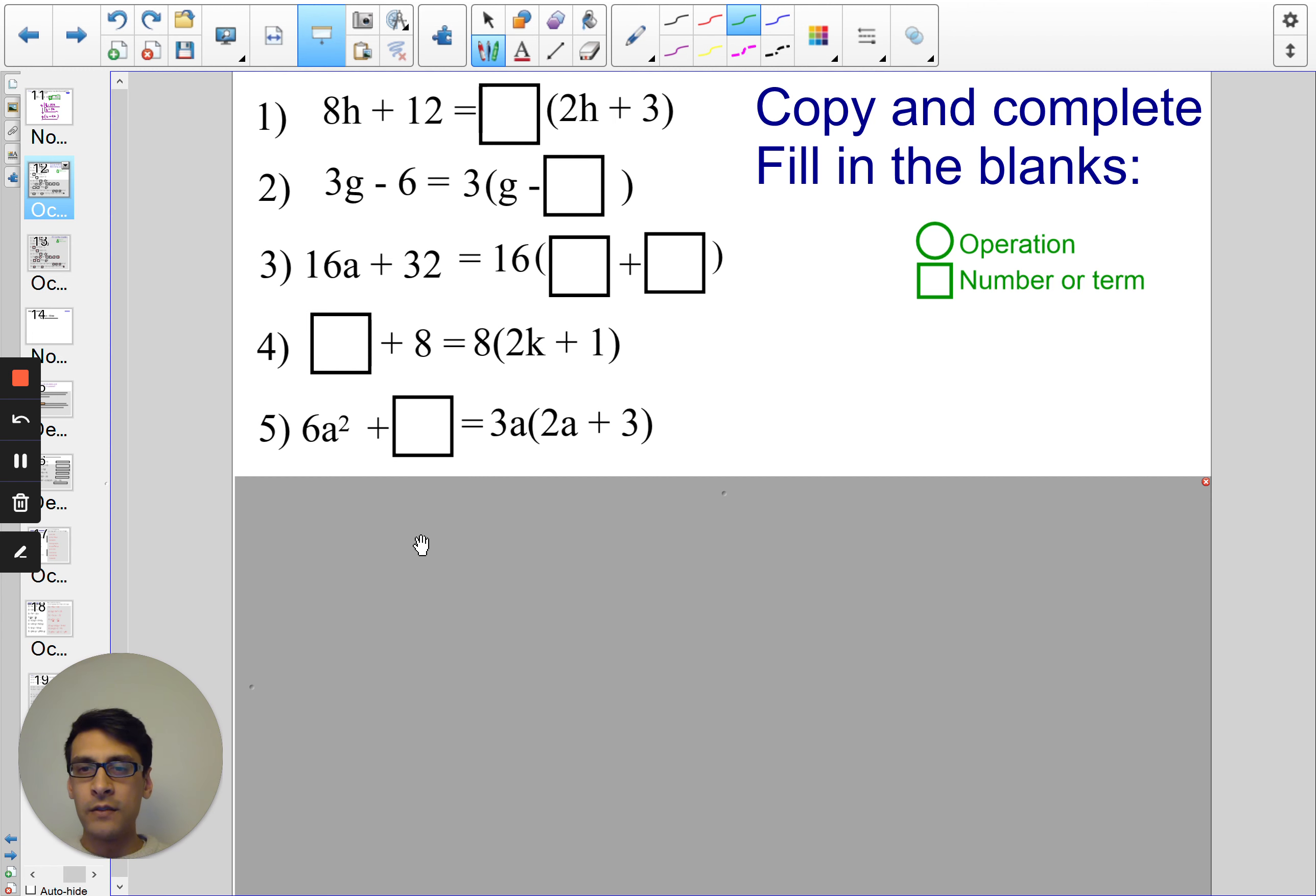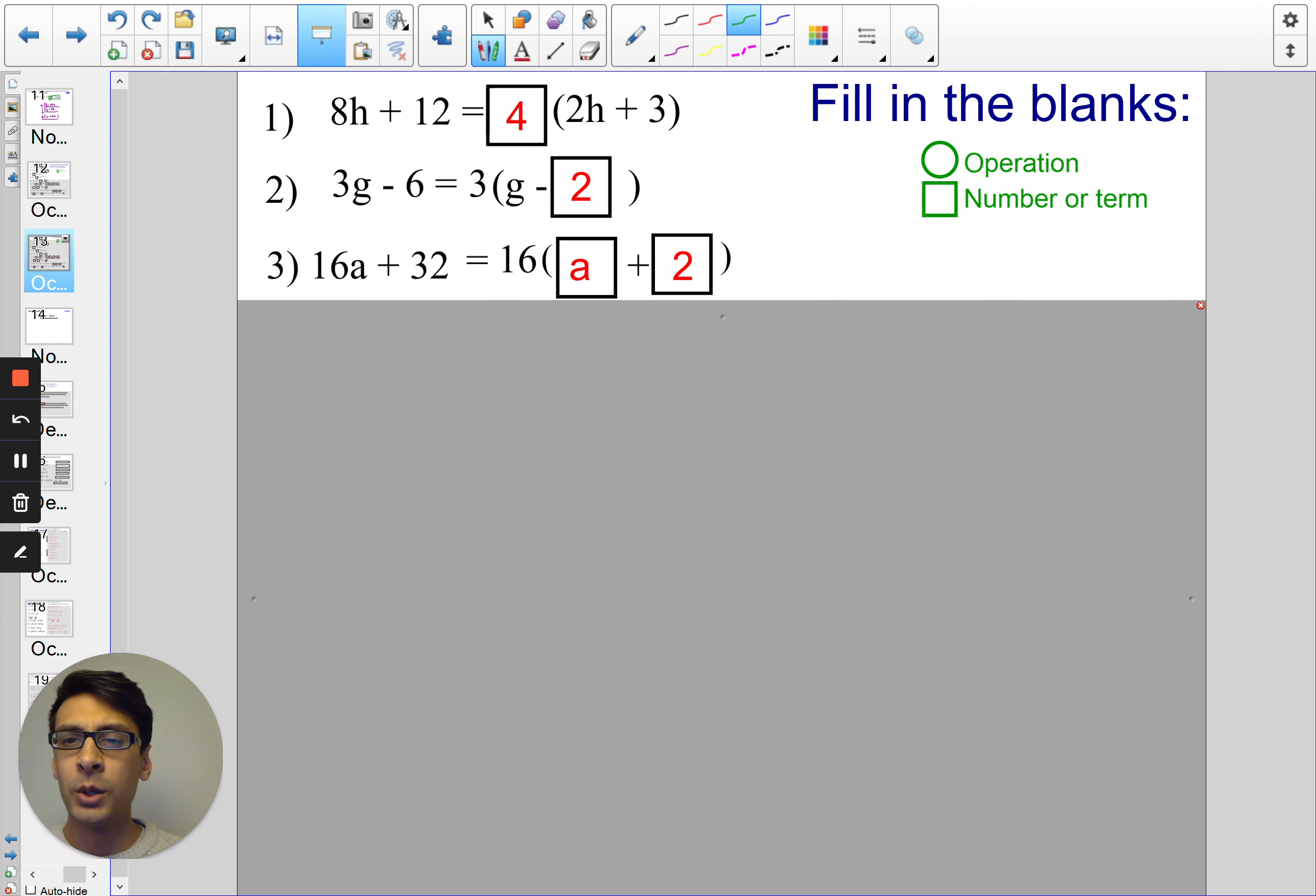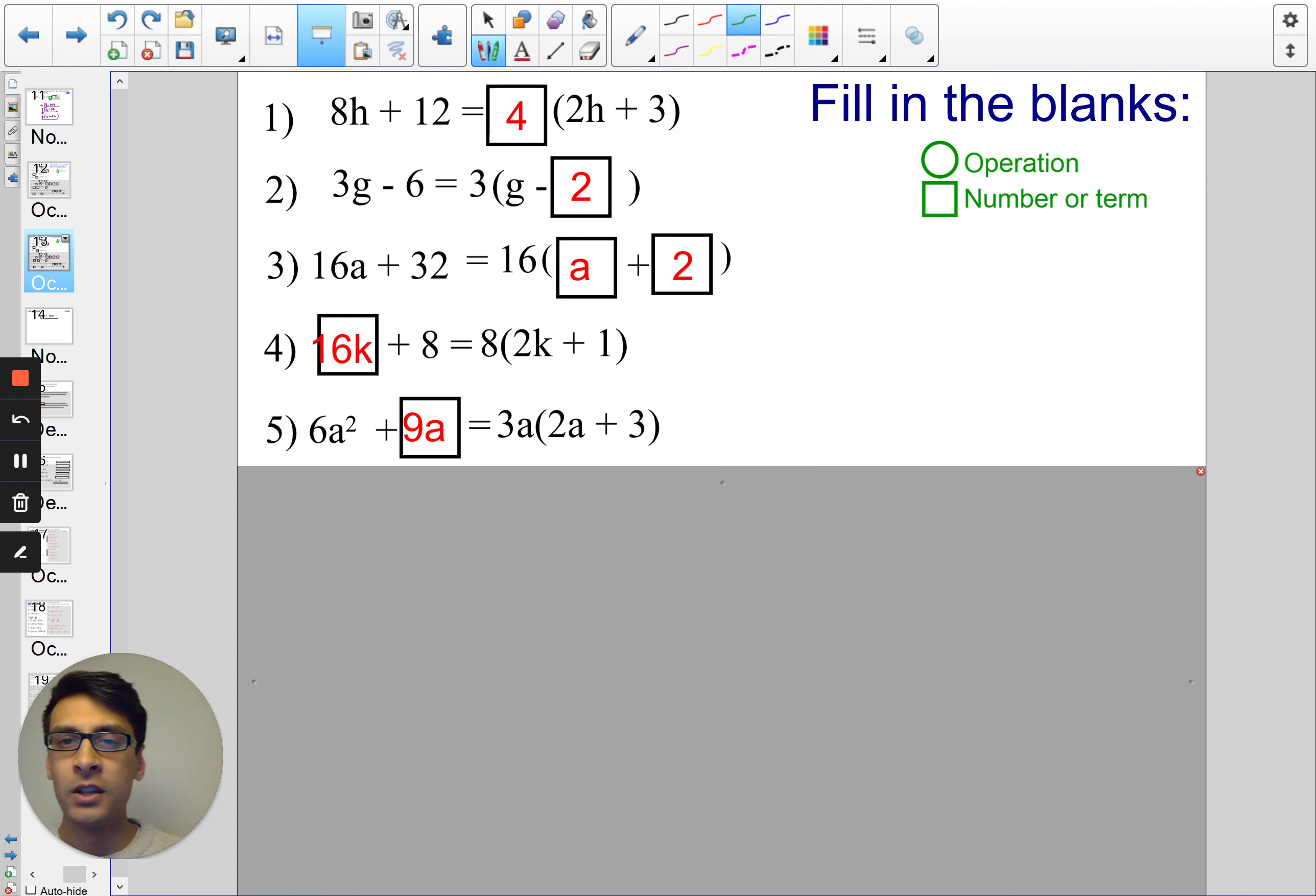Okay, so you should have done all five questions. I'm going to show you the answers to the first five questions so you can mark them. If you still haven't done it, just go back and pause the video. So first for question one, you should have got the following four. Question two, you get two. Question three, question four and question five. So make sure you tick the work that you get correct.